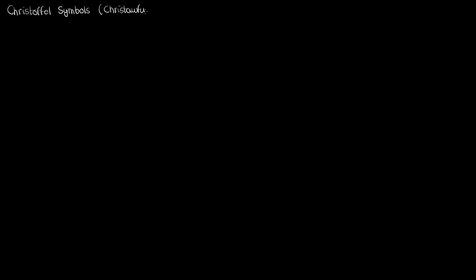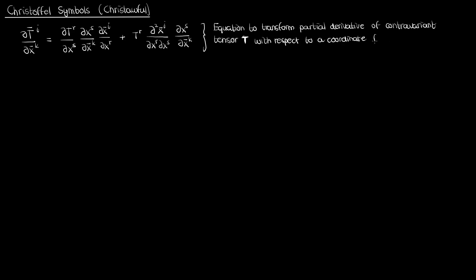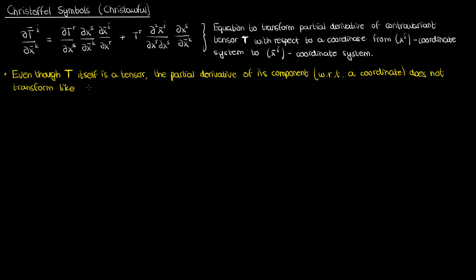Let's talk about the Christoffel symbols. We'll start by recalling the previous video where we found the equation to transform the partial derivative of a contravariant tensor component with respect to a coordinate from the unbarred coordinate system x super i to the barred coordinate system x super i bar. As we discussed in the last video, this equation unfortunately does not represent a transformation law, so even though T itself is a tensor — a contravariant tensor — the partial derivative is not a tensor because it does not transform like a tensor per this equation.